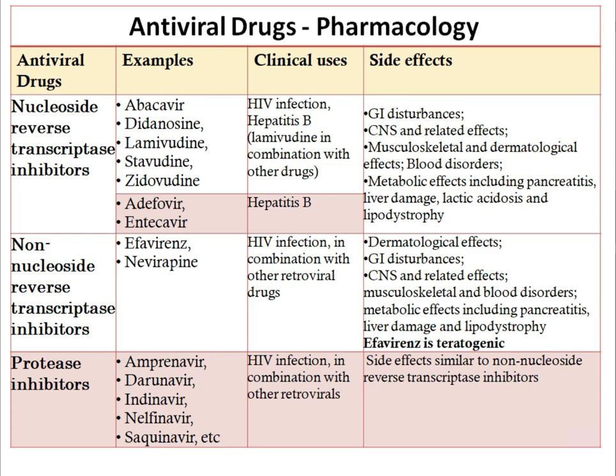The third important class of drugs is protease inhibitors, where the examples are amprenavir, darunavir, indinavir, nelfinavir, and saquinavir. HIV infection is the major clinical use, in combination with other antiretroviral drugs. Side effects are similar to non-nucleoside reverse transcriptase inhibitors.